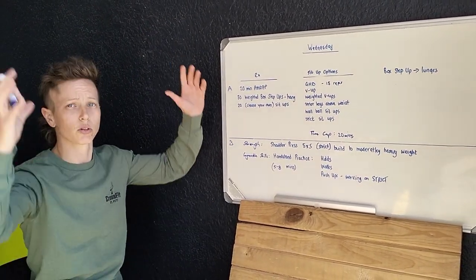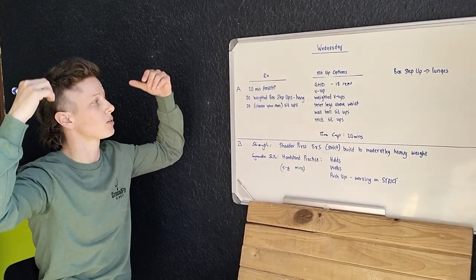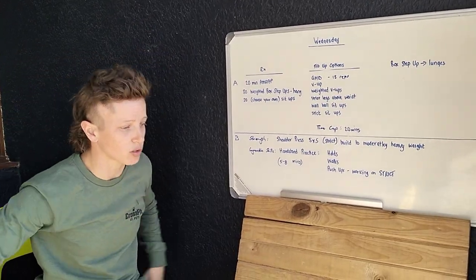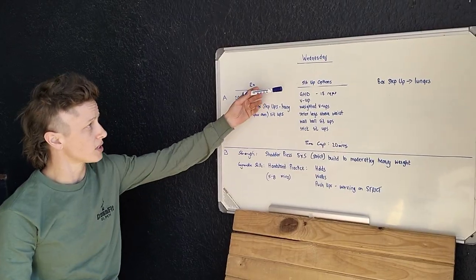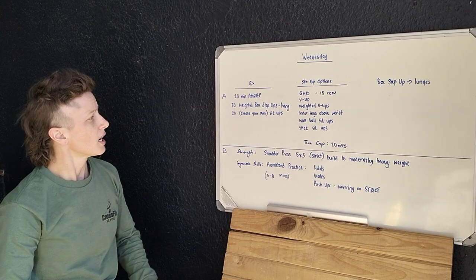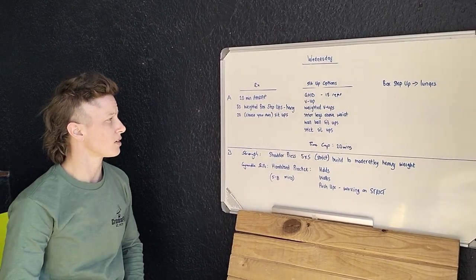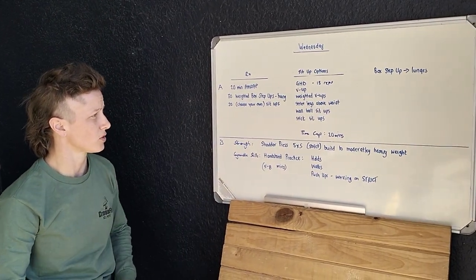Wall ball sit-ups can be done with the wall ball over your head, or they can also be done with the wall ball behind your back and you're over-extending, reaching to get to the ground. It's a very similar stimulus to the GHD. And then we've got the stick sit-ups that we all know and love.